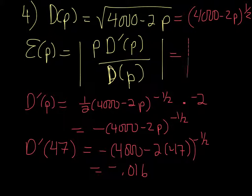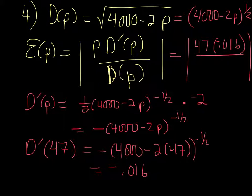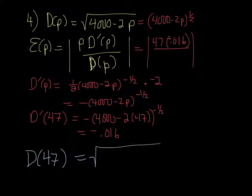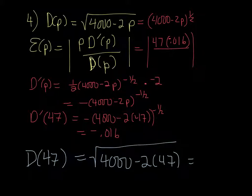And we'll put that into the equation. So 4,000 minus 2 times 47. I get 3,906 for that. And then I'm going to take that to the power of -0.5. And then multiply by -1 and we get -0.016.